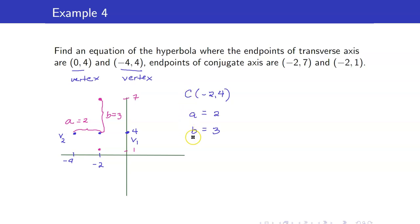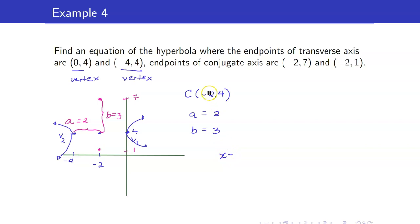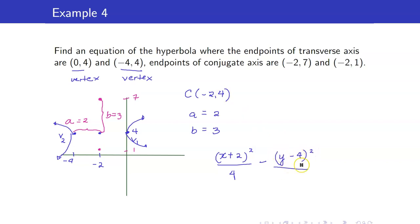There's no need to solve for c because we already have everything we need: the center, a, and b. Our transverse axis is a horizontal line, so our hyperbola is opening sideward and we start with x. The equation of our hyperbola is (x minus negative 2) squared over a squared minus (y minus 4) squared over b squared, equal to 1.